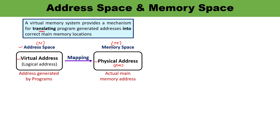You must be aware of address space and memory space. Address space is the set of addresses generated by the program, while memory space is the actual memory locations which are directly addressable for processing — the actual main memory addresses. In most computers, address and memory space are identical: N and M are identical. But when talking about virtual memory, address space must be larger than memory space — N must be greater than or equal to M.